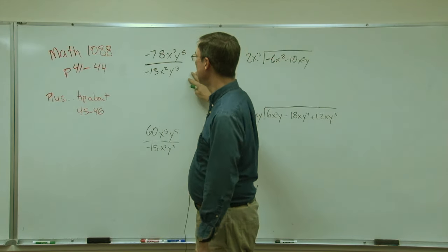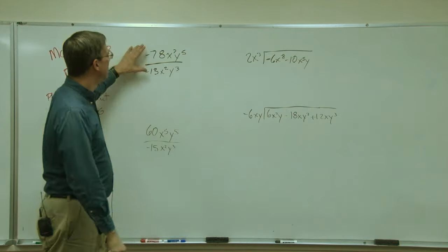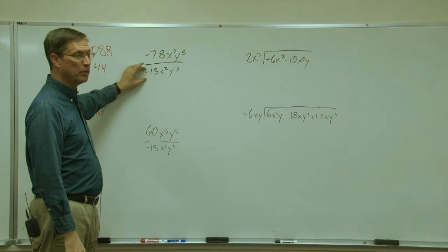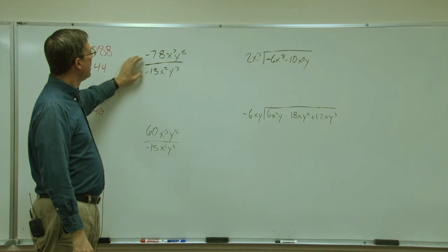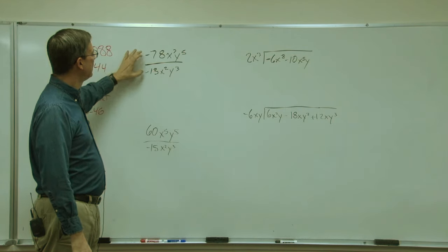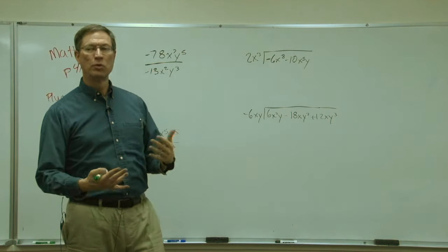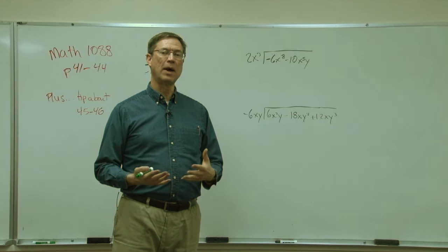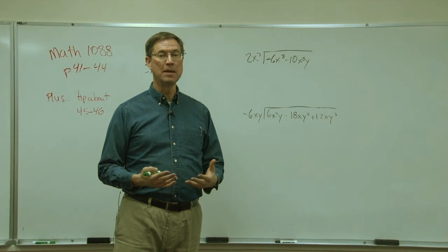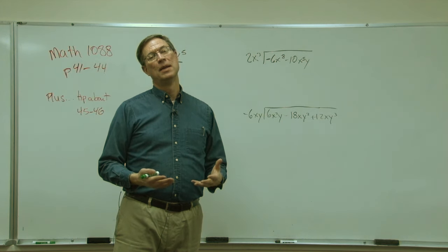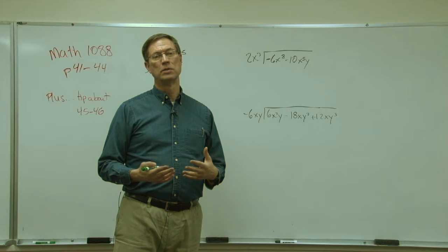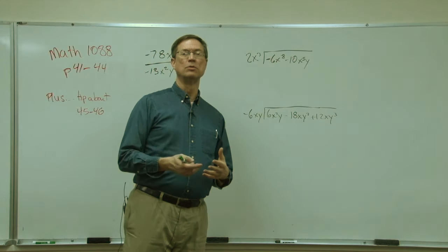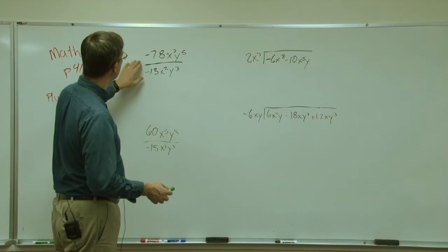All right, let's talk about division when we have something divided by something. In this case, we have a negative divided by negative, and we have to remember the rules. If we are multiplying or dividing and the signs are the same, the answer is always positive. If the signs are different, the answer is negative.